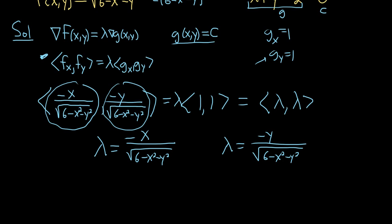Therefore, they must be equal. So negative x over the square root of 6 minus x squared minus y squared is equal to negative y over the square root. So these are the same because they're both equal to lambda. So therefore, they must be the same.